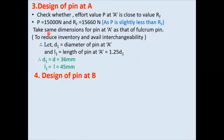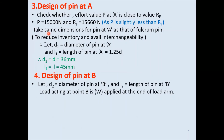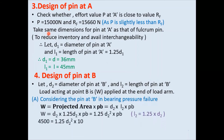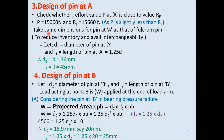Step 4 is design of pin at load point. d2 and L2 are the diameter and length of the pin at the load point. Considering bearing pressure failure: W = projected area × bearing pressure. Substituting values and using L2 = 1.25 × d2, we find d2 = 18.97 mm, say 20 mm, and L2 = 25 mm.